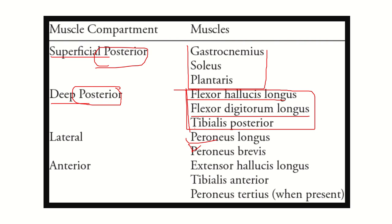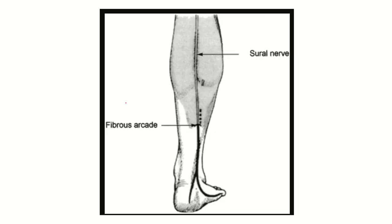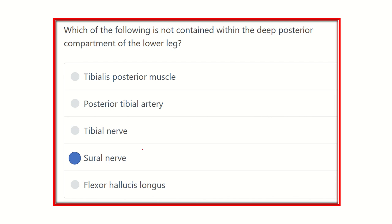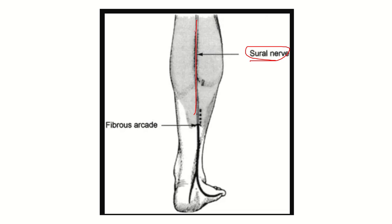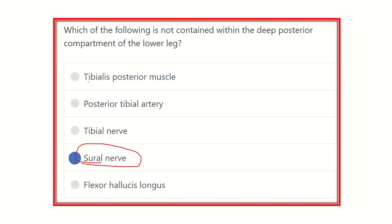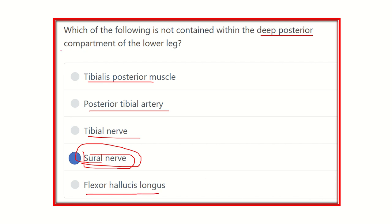In the posterior compartment, the posterior tibial vessels and tibial nerve are present in the deep layer. The sural nerve is located in the posterior aspect but in the superficial layer — it lies outside the deep muscle compartment. So the answer is sural nerve, as tibialis posterior, posterior tibial artery, tibial nerve, and flexor hallucis longus are all in the deep posterior compartment, but the sural nerve is not.